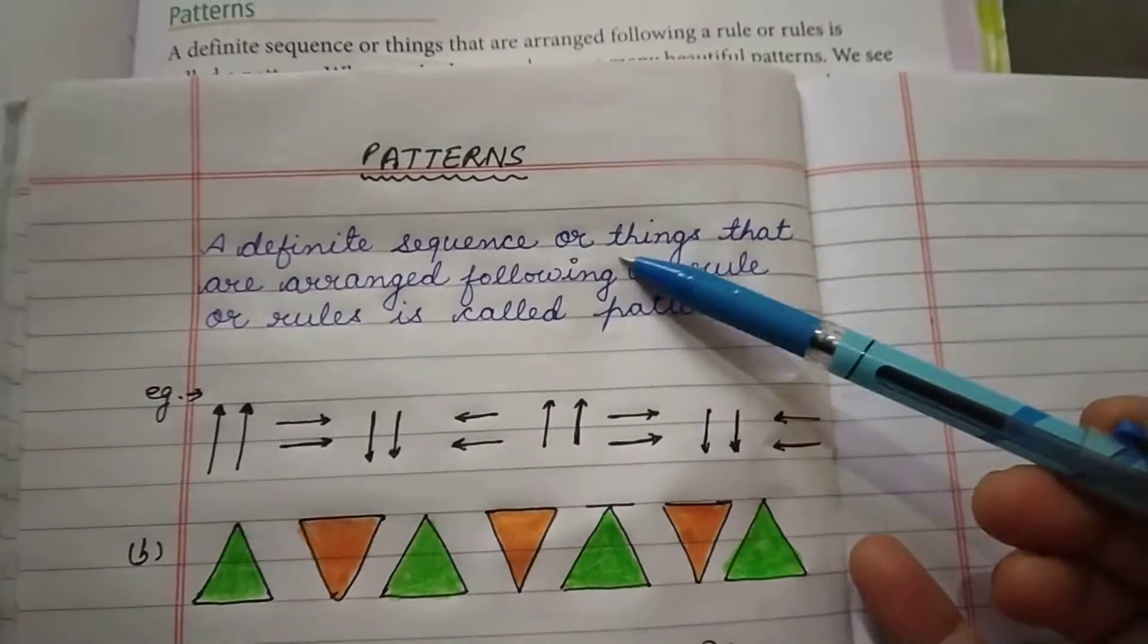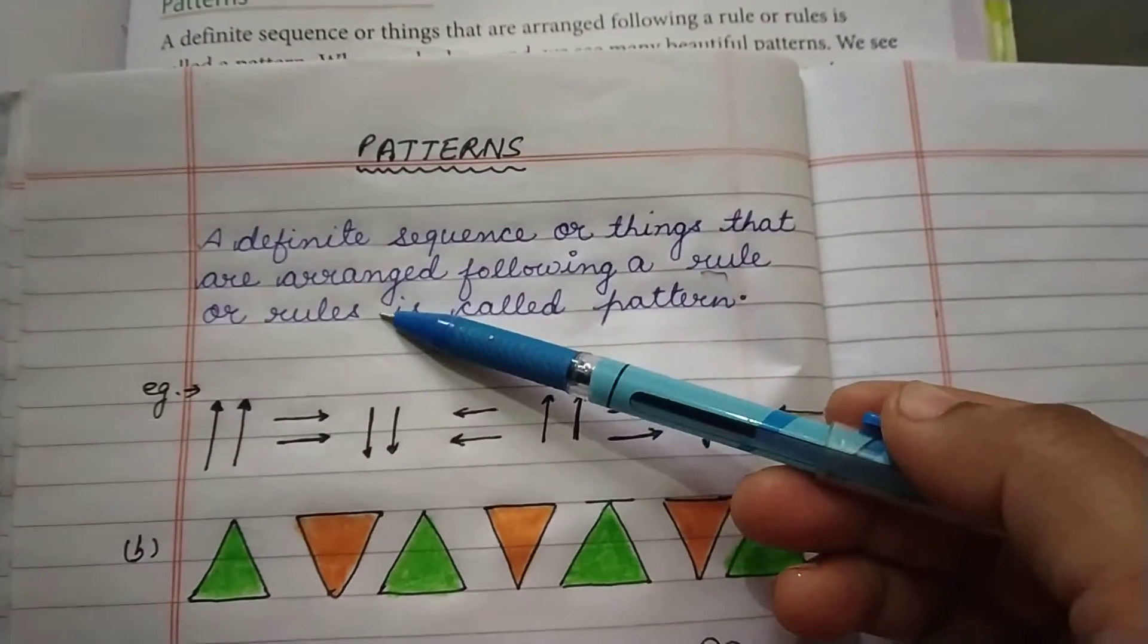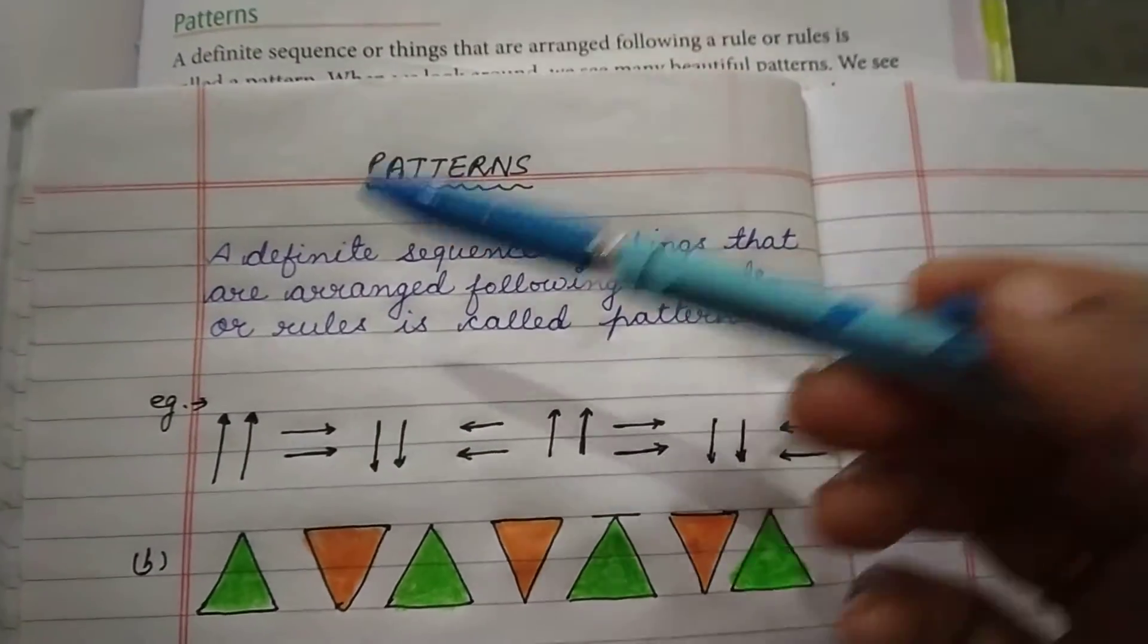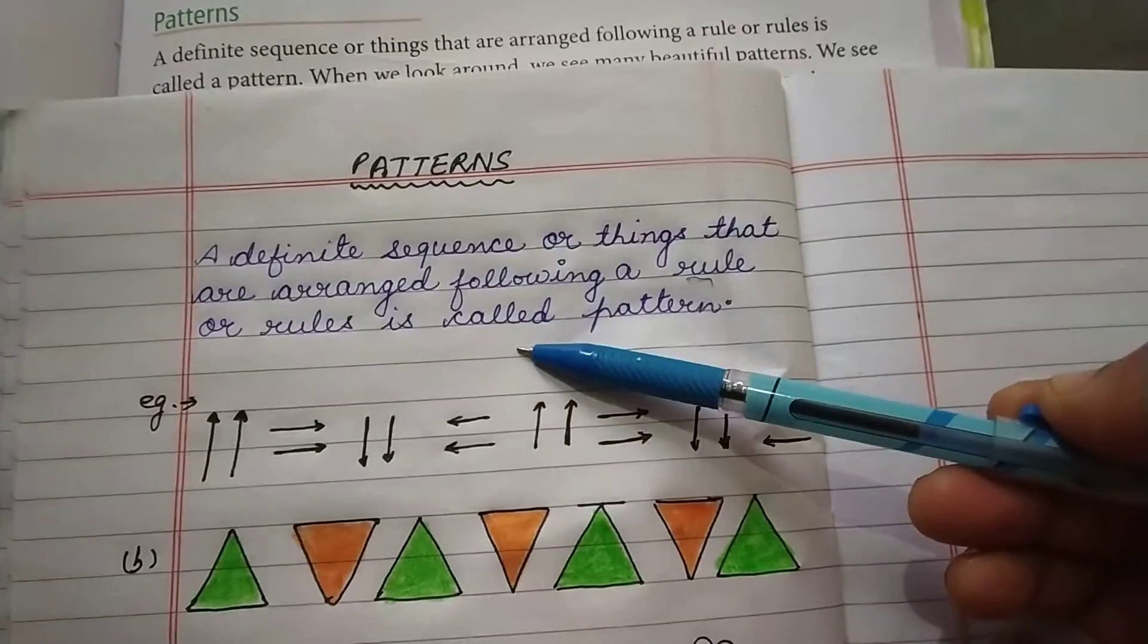A definite sequence or things that are arranged following a rule or rules is called pattern.